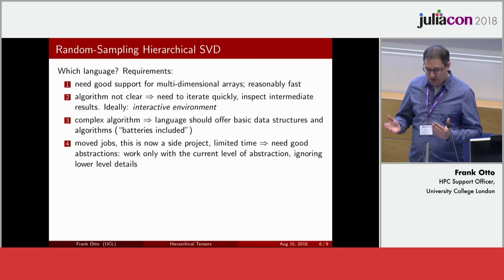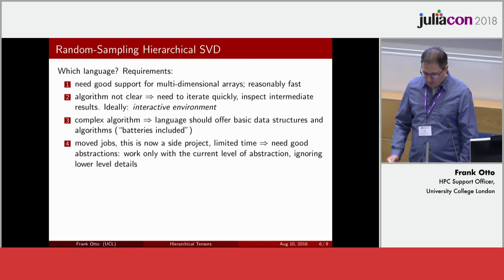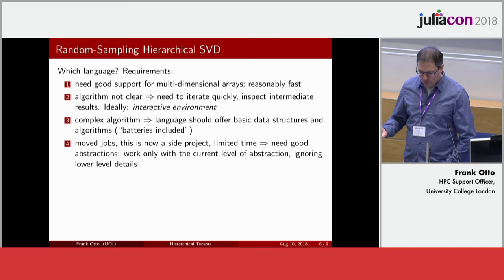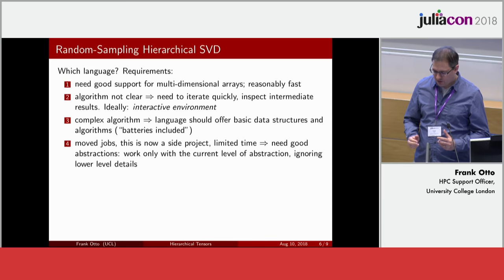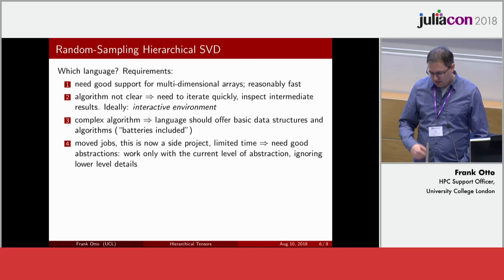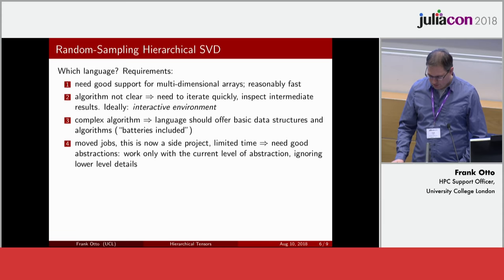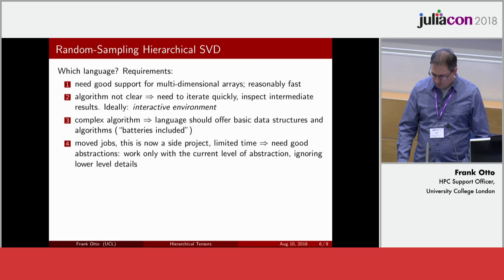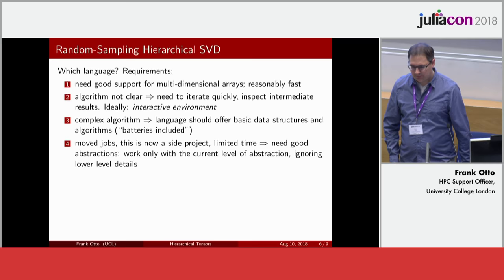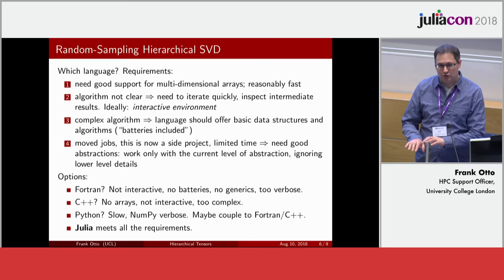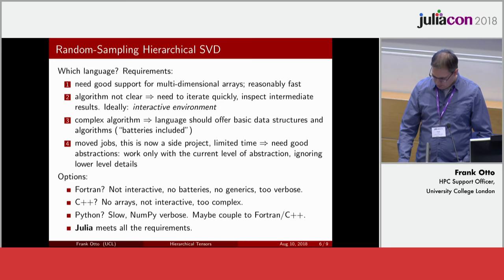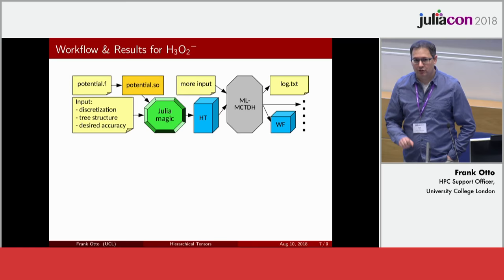At the end of 2013 I really wanted to implement hierarchical SVD with sampling but it didn't exist yet. Faced with the question of which language to implement it in, my requirements were: good support for multi-dimensional arrays, reasonable speed due to a lot of data, an interactive environment to iterate quickly on the algorithm, a language that doesn't get in the way with lots of built-in features, and good abstractions since this was a side project with limited time. Julia is the language that meets all of those requirements better than others, so I implemented it in Julia.